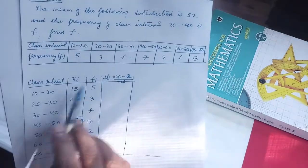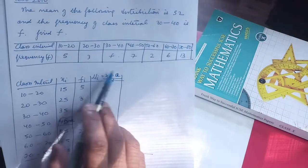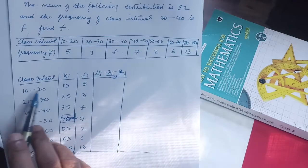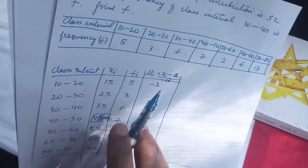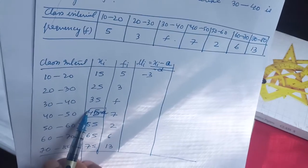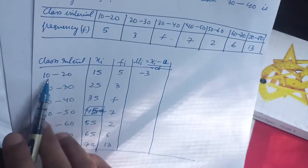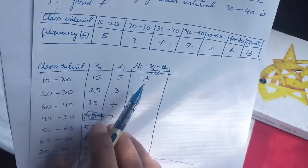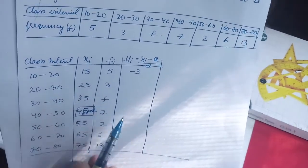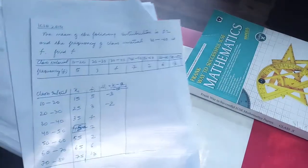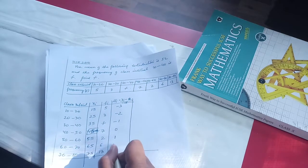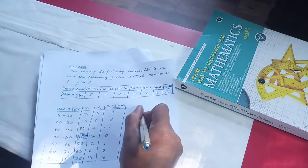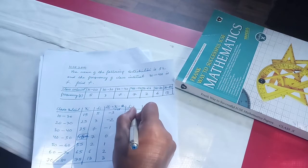Now we calculate ui. For the first: 15 − 45 = −30, divided by class size 10 gives −3. Then following the sequence, we get: −3, −2, −1, 0, 1, 2, 3.